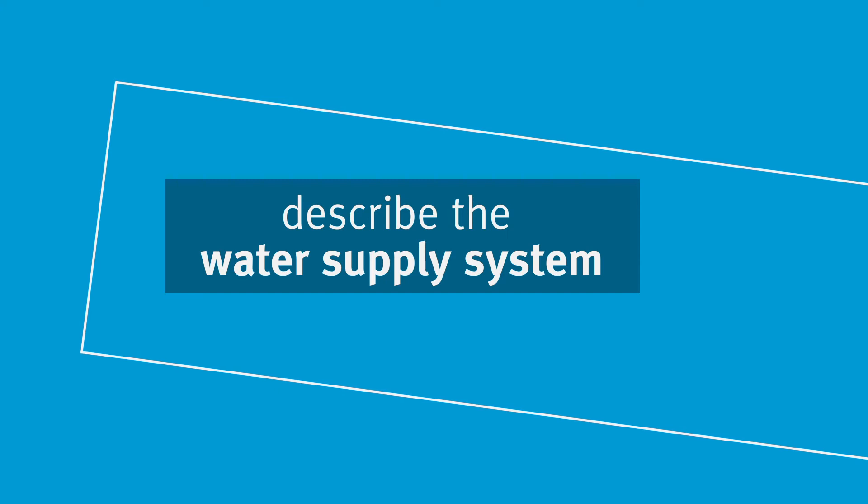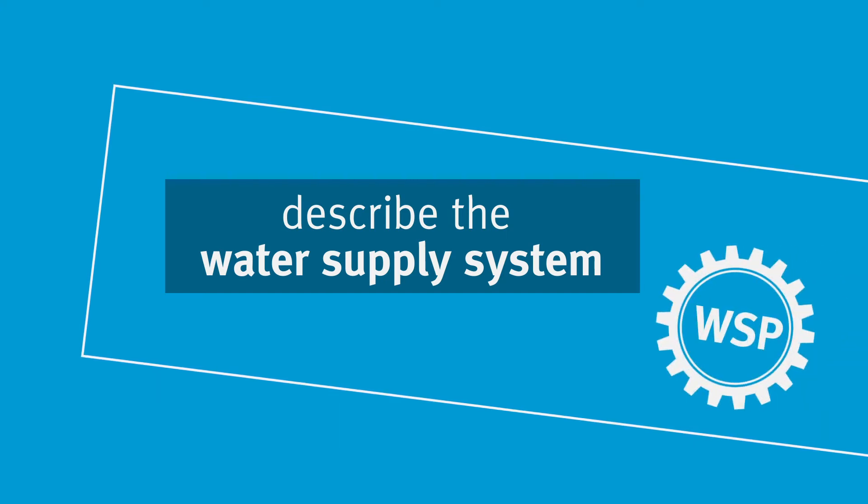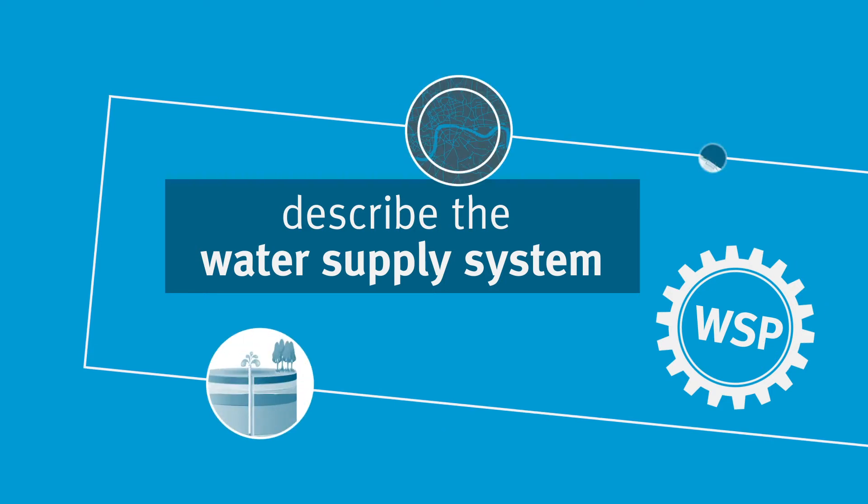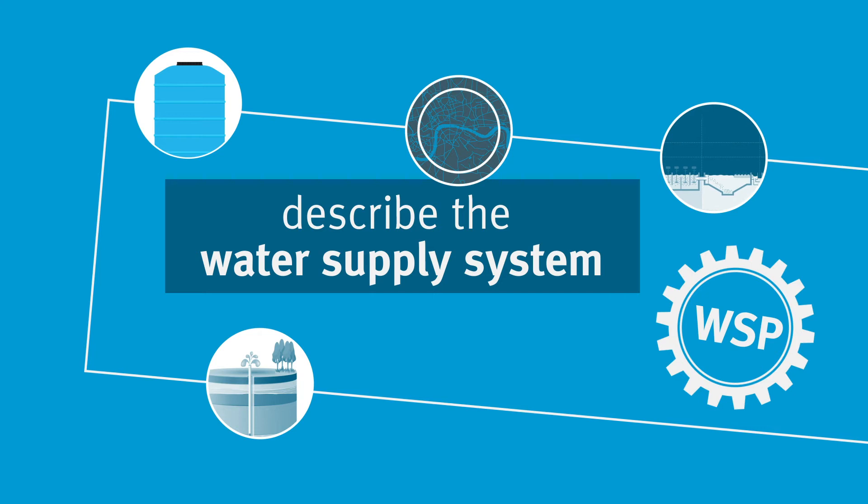The description of the Water Supply System is the basis of any Water Safety Plan. This includes information on the catchment area, water production, treatment, storage and distribution.